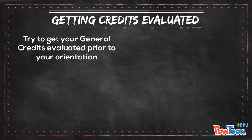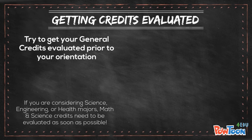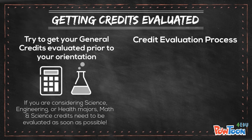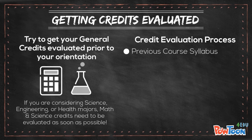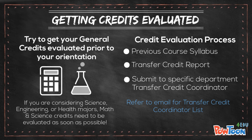If you have general credits, you want to try and get as many of them evaluated prior to orientation as possible. If you are thinking about a major in the sciences, engineering, or health professions, it is very important that you try to get any math and science general credits evaluated as soon as possible. You will need a syllabus for the course from your previous institution and then submit that with your transfer credit report to the transfer credit coordinator for that department. See the email we sent you for the link.